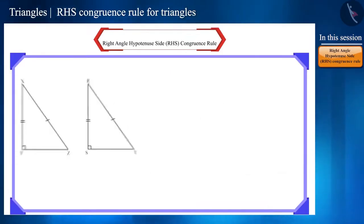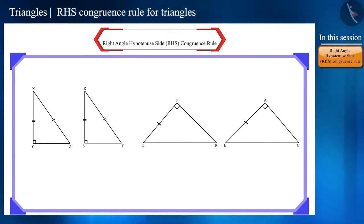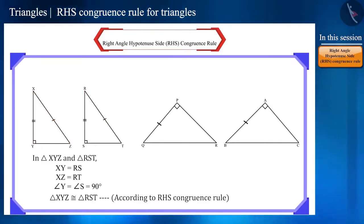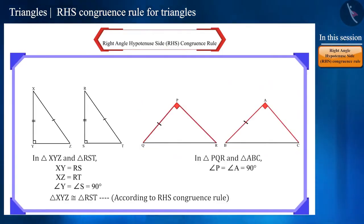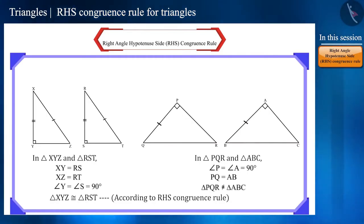Friends, a few pairs of triangles are displayed on the screen. Which of the following pairs of triangles are congruent according to the RHS congruence rule? In the first pair, both the triangles are similar as they have one equal side and equal hypotenuse. Therefore, they are congruent according to the RHS congruence rule. In the second pair, both triangles are right angle triangles and one side is also equal, but their hypotenuse must also be equal, which is not the case here. Therefore, these two triangles are not congruent.